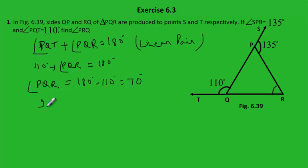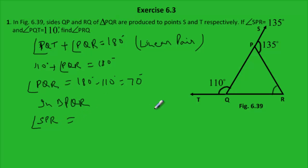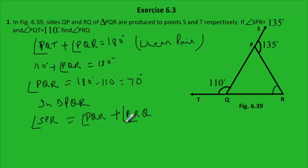Now in triangle PQR, we know that angle SPR is the exterior angle. So by the exterior angle theorem, angle SPR is equal to the sum of opposite interior angles PQR and PRQ. So angle SPR is equal to angle PQR plus angle PRQ.